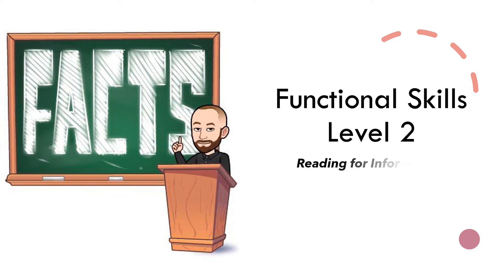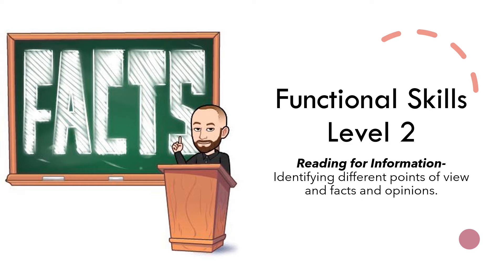Hi guys, this is David here from WriteOnResources and today we're going to be taking a look at reading for information. This is for anyone studying the Level 2 Functional Skills qualification in English. During this video we're going to be able to identify different points of view and facts and opinions. This is going to help you towards the reading assessment but also understand facts and opinion, which is a key element that you need to know when you apply it to your writing assessment as well.